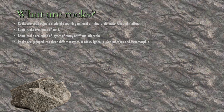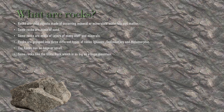Rocks are grouped into three different types: igneous, sedimentary, and metamorphic. These rocks can be huge or small. Some rocks, like the Uluru Rock, which is a sacred rock mountain, are as big as a mountain. Rocks can also be colorful or dull.